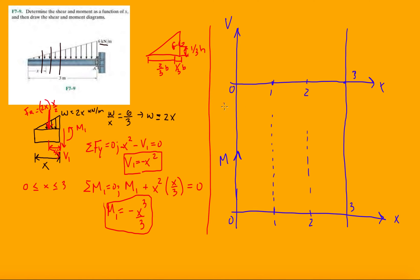Starting with V1 equals negative X squared: at X equals 0, V1 is 0. At X equals 1, V1 is negative 1. At X equals 2, V1 is negative 4. At X equals 3, V1 is negative 9. So there's our shear diagram — it should be a downward parabola, a quadratic function. It may look like a straight line in the sketch, but don't forget it is quadratic.